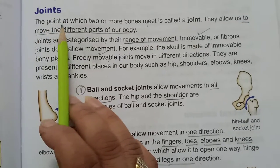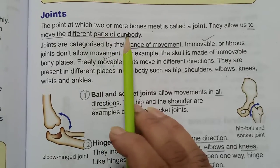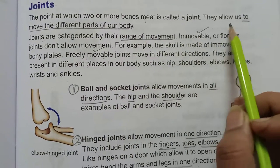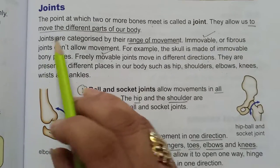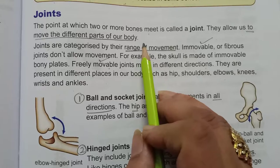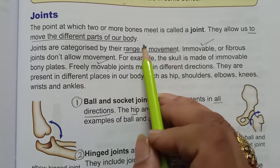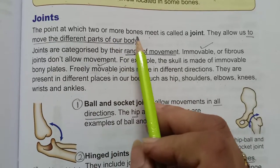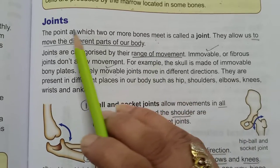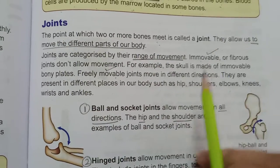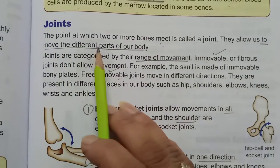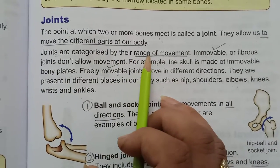The point at which two or more bones meet is called a joint. They allow us to move the different parts of our body. What are joints? These are the points at which two or more bones meet. What are their functions? They help us to move the different parts of our body.